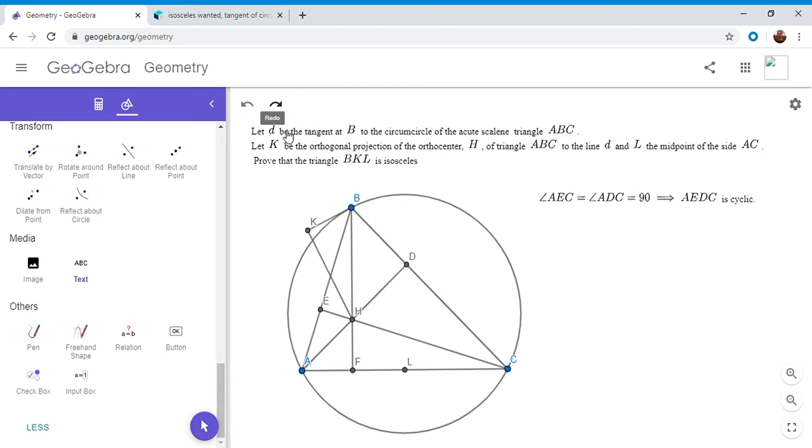And why is this useful in helping us solve the problem? Well, it means that we want to show that KL equals BL, but if L is the center of a circle through AEDC, we know that LE equals LD. So I'm going to write this all out. This is what I said before: AC is the diameter of the circle through AEDC, and L is the center of that circle because it's the midpoint of the diameter.